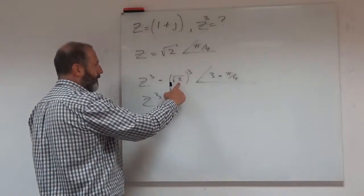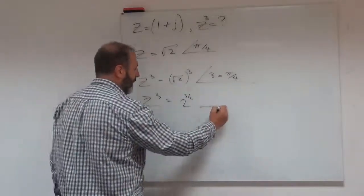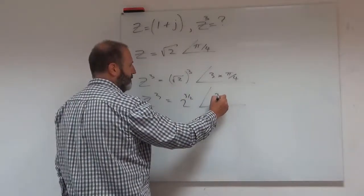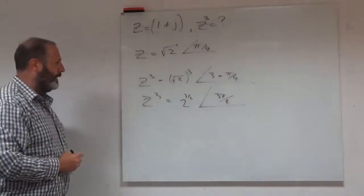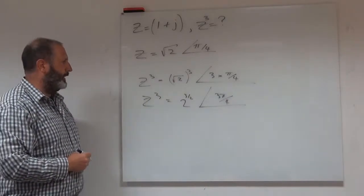So if you wanted to tidy this up, this is 2 to the half, so we could rewrite this as something like so. And there we could have 3 pi over 4. I think I'd probably leave it alone there.